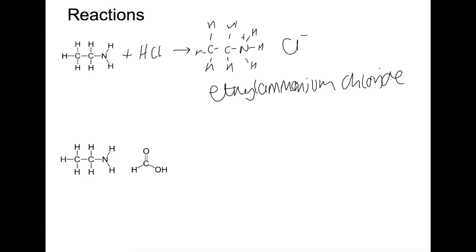In this next reaction we have ethyl amine reacting with methanoic acid, a carboxylic acid this time rather than a mineral acid. Here we are going to get ethyl ammonium methanoate, which is another salt.